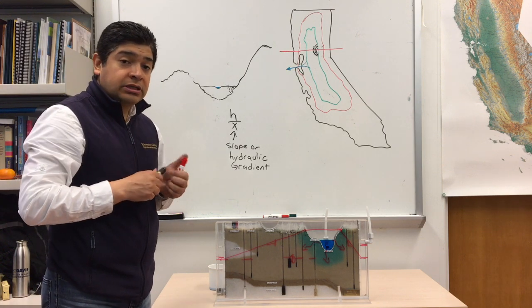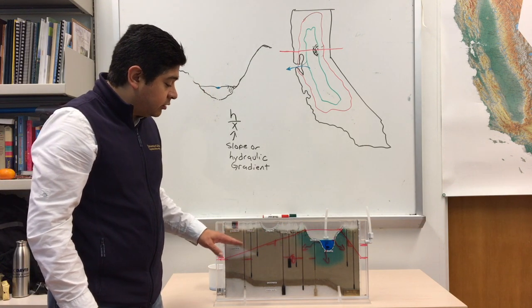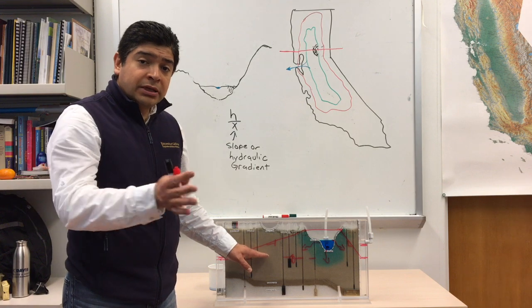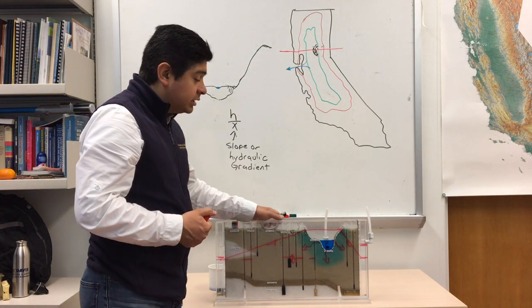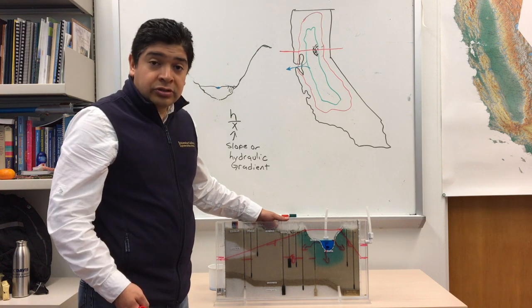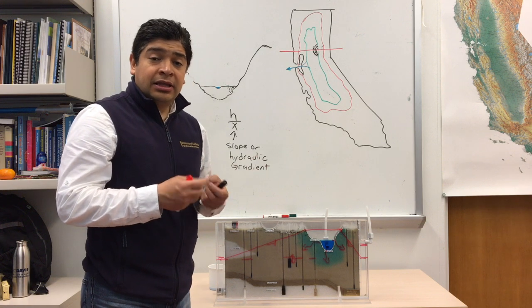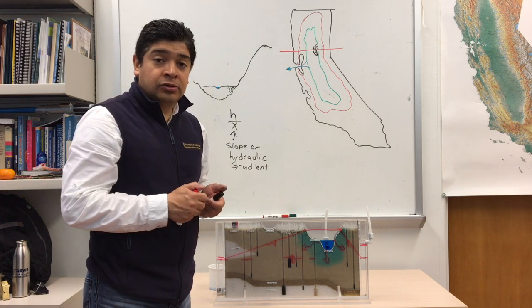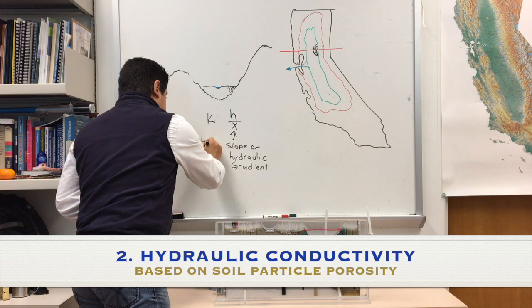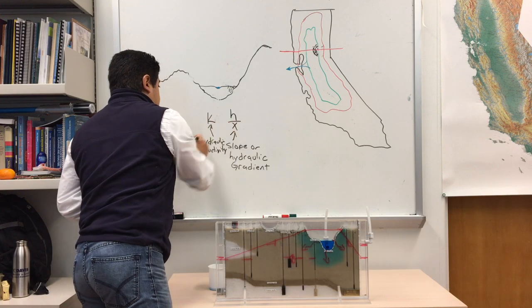That is the first principle. The second principle relates to how water moves faster or slower. It does depend on what is the type of soil, what is the type of material that the water is passing through. This depends on the type of soil and the porosity of the soil. The larger the porosity, water will move faster throughout those pores. If the soil is a little bit more compacted, then water will have a hard time moving around all those soil particles. That is called hydraulic conductivity.